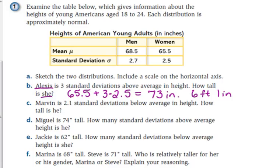Marvin is 2.1 standard deviations below average in height. So let's look at the men's. We're going to subtract 2.1 times the standard deviation, 2.7. And what is it? 62.83 inches. Yes, you always multiply. You always multiply.